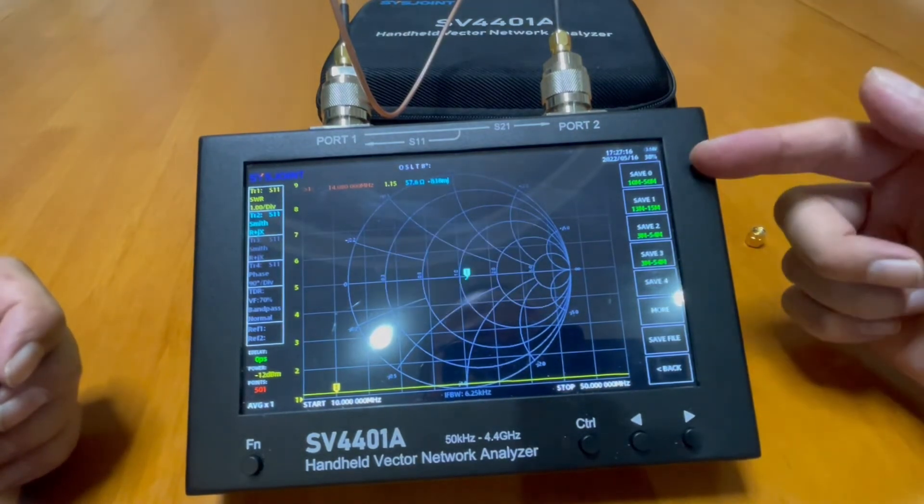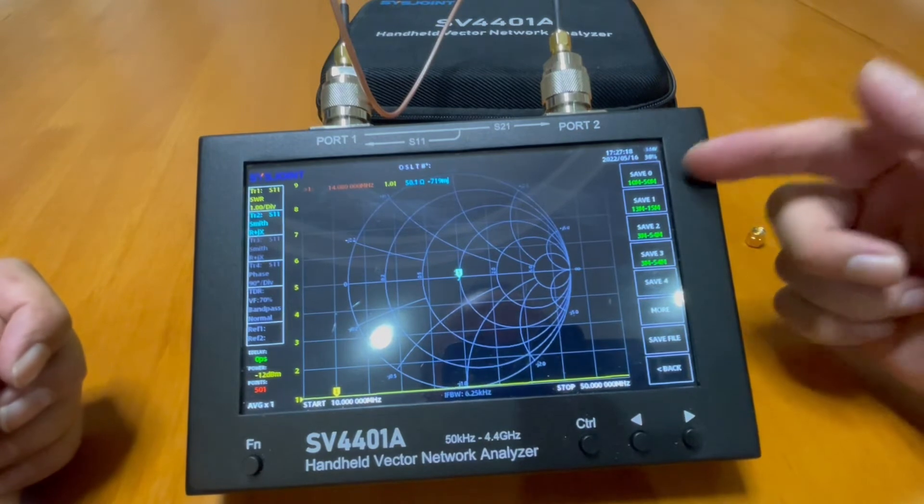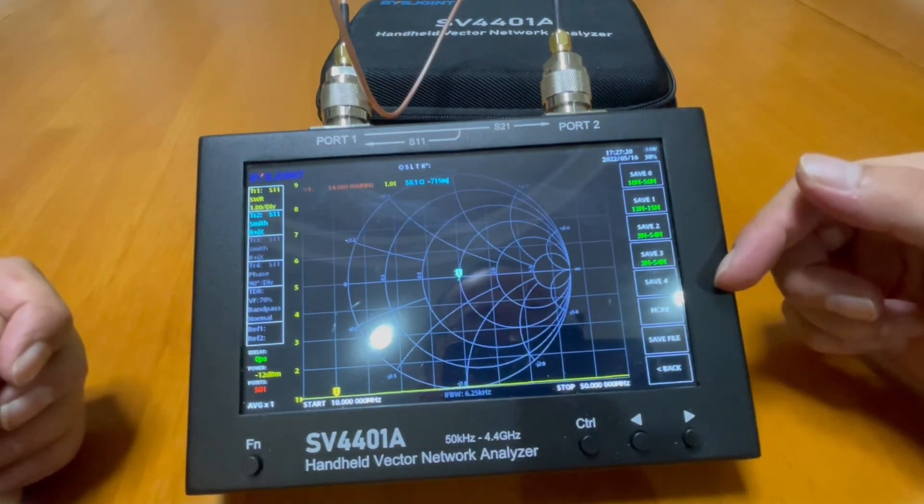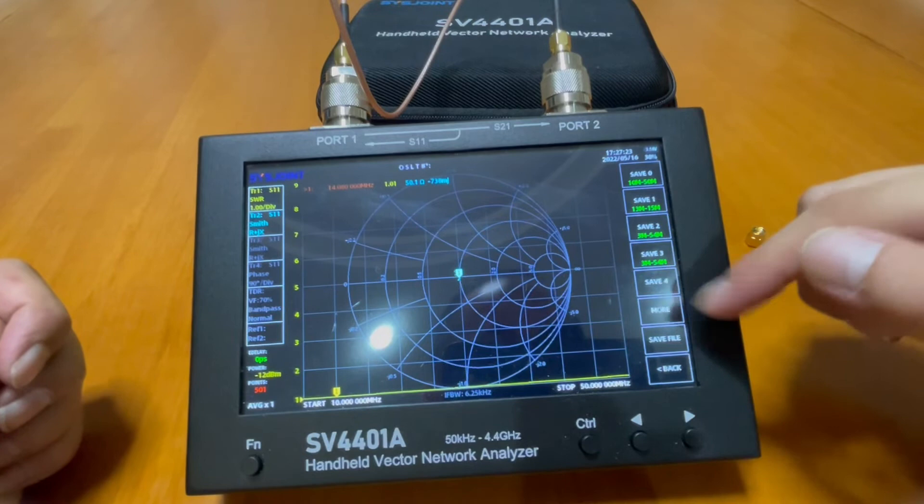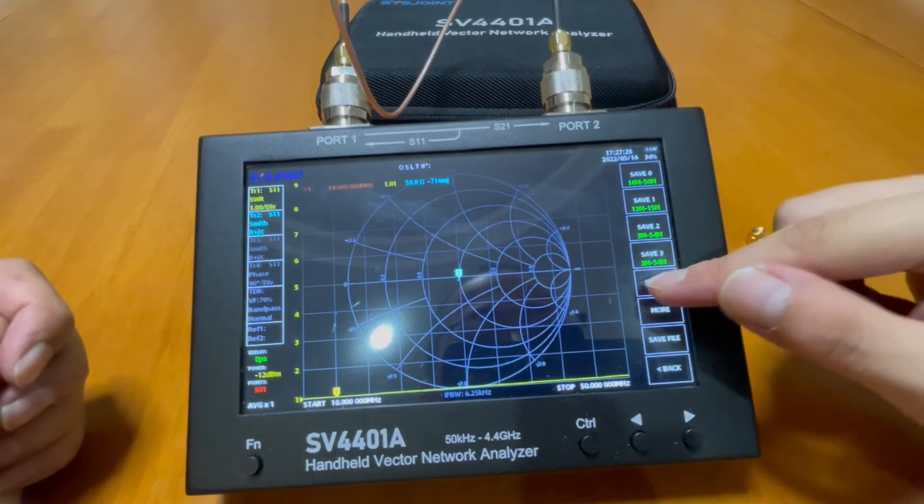What you're going to do is save the calibration result in one of the channels. Let's say we put the result to channel 4.